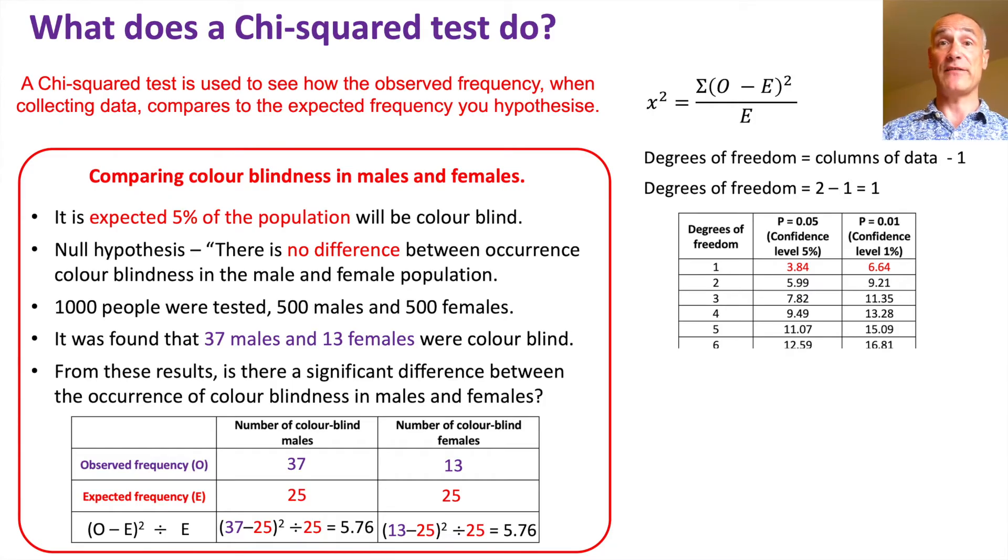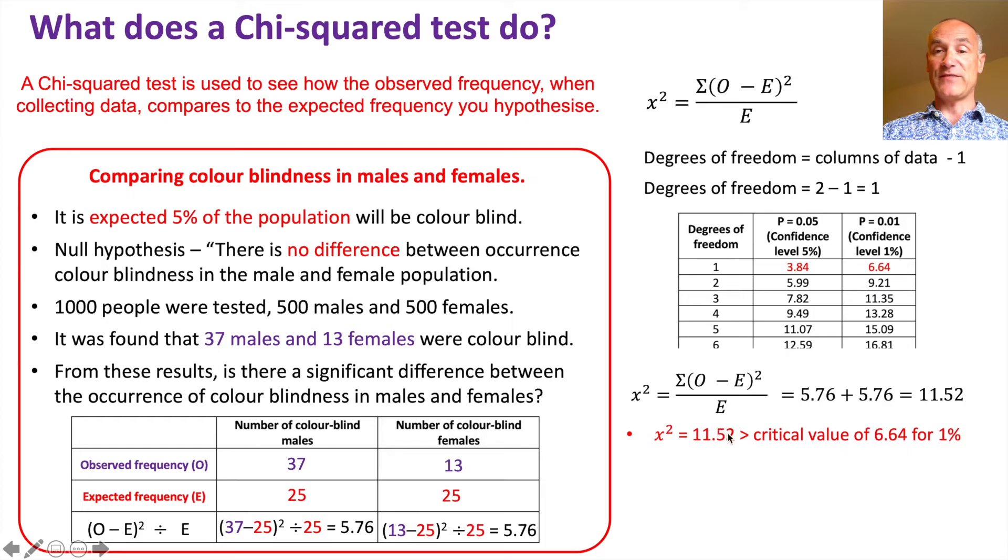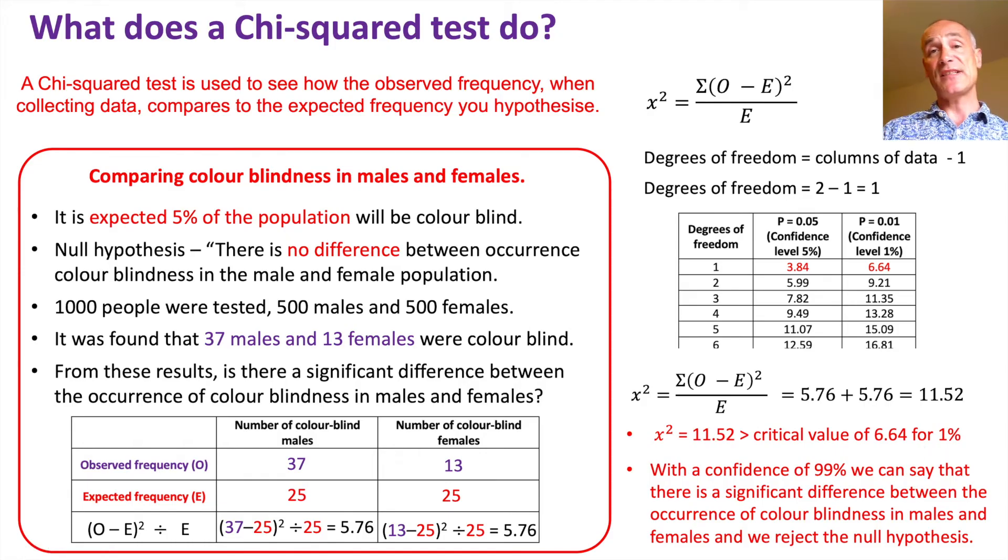Now to calculate the critical value of our degrees of freedom at 5% is 3.84 and at 1% it's 6.64. So let's find out what our chi-squared value is. We've got to sum up these two and we get 5.76 plus 5.76 gives us 11.52, which you can see is clearly much larger than 5% confidence and still a lot larger than 1% confidence. So our chi-squared value of 11.52 is much greater than the critical value of 6.64 for 1%. So we can say with a confidence of 99% that there is a significant difference between the occurrence of color blindness in males compared with females, and therefore we can reject the null hypothesis.